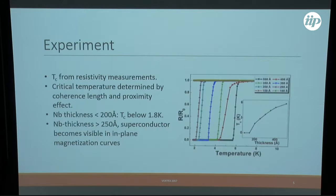These are the TC measurements. You can see now that when you make a thicker layer, the TC grows. Below 200 angstrom we haven't measured any TC because we only measured down to 1.8 Kelvin. Then the TC is going up, which is due to coherence length and proximity effect. Then above 250 angstrom to 300 angstrom it starts that we can actually see the magnetization in the magnetization curves.